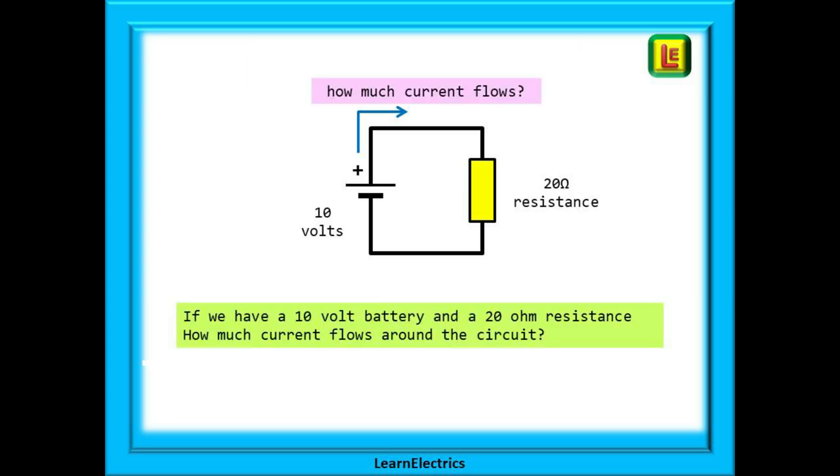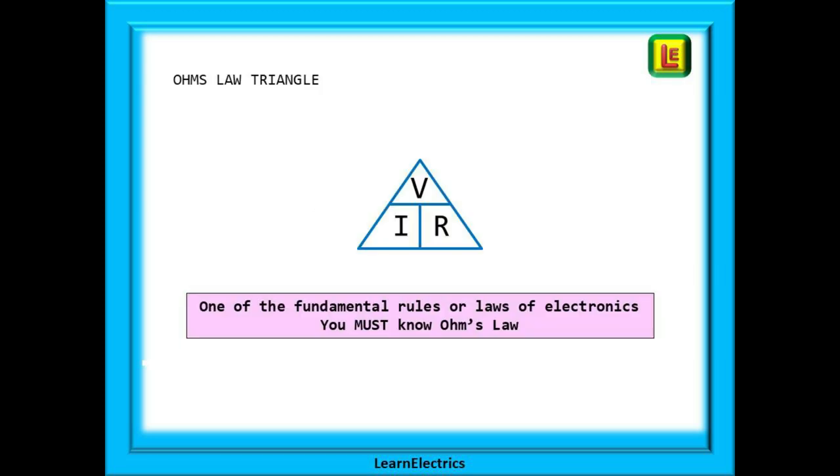But how much current flows? That is a good question and there are exact engineering laws that can tell us this. If we look at the circuit shown here we have a 10 volt battery and a 20 ohm resistor and we want to know how much current flows around the circuit. We can calculate this using Ohm's law, named after George Ohm, a German mathematician and school teacher. This is one of the fundamental rules or laws of electronics and you must know Ohm's law. If you want to be good with electronics then you need to be good with Ohm's law. There is no way of avoiding it. Learn it and you have a lifelong skill.